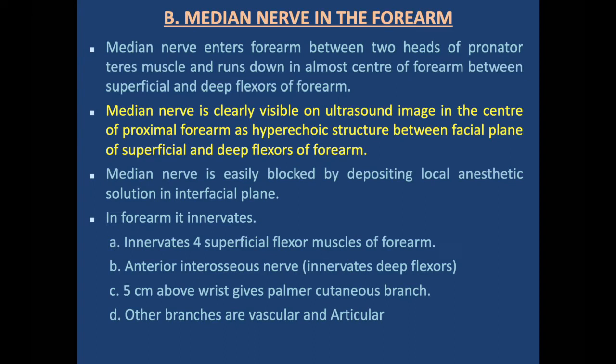The median nerve enters the forearm between the two heads of pronator teres and runs down in almost the center of the forearm between the superficial and deep flexors. It is clearly visible on ultrasound image as a hyperechoic structure between the fascial plane of the superficial and deep flexors, and is easily blocked by depositing local anesthetic solution in the interfascial plane. In the forearm, it innervates four superficial flexors, gives off the anterior interosseous nerve for deep flexors, and five centimeters above the wrist gives off the palmar cutaneous branch.